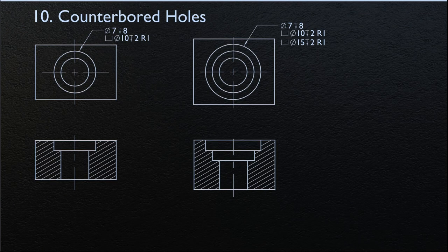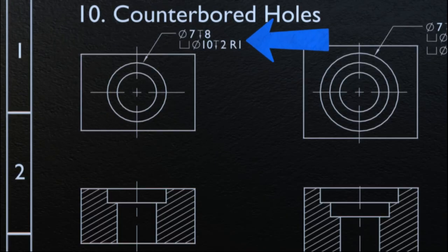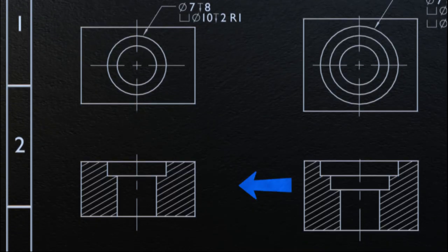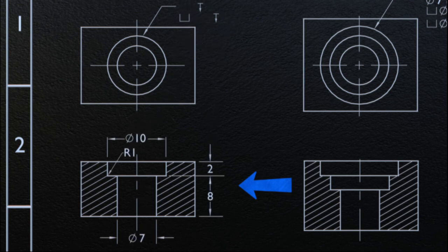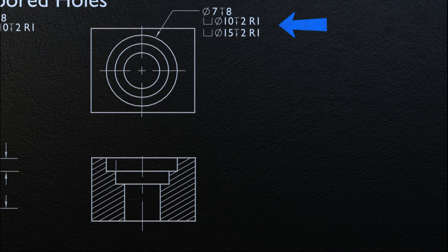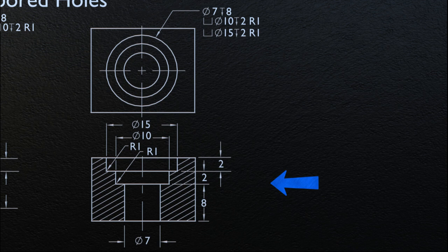Next, we are going to discuss counterbore holes. Counterbore holes may be specified as shown, consisting of the following information: diameters, depth, radius, and counterbore symbol. Where the thickness of the remaining material has significance, this thickness is dimensioned rather than the depth. For holes having more than one counterbore, where applicable, a fillet radius may be specified. To get a better understanding, these respective dimensions can be placed in the section view depicting the respective features.